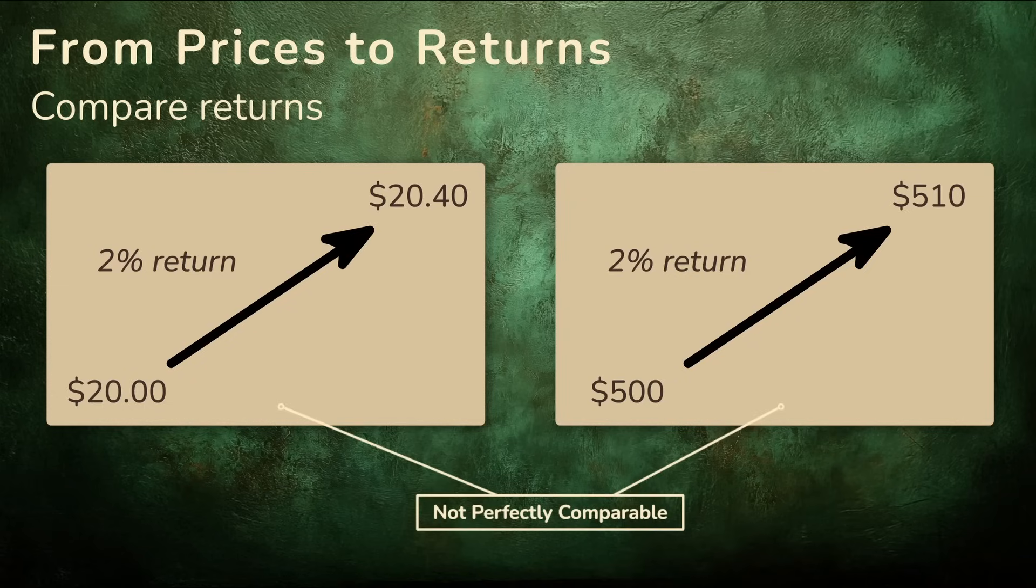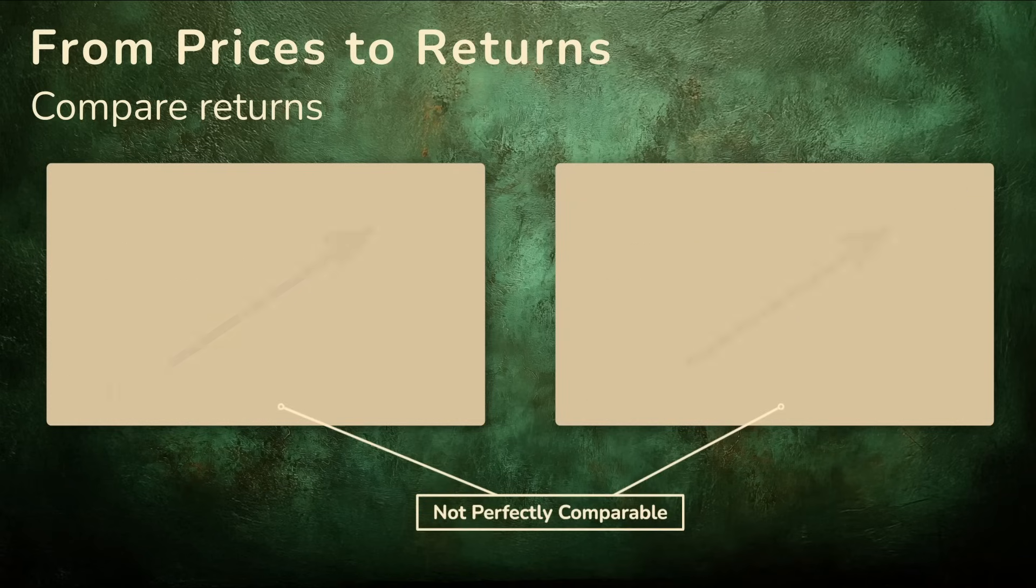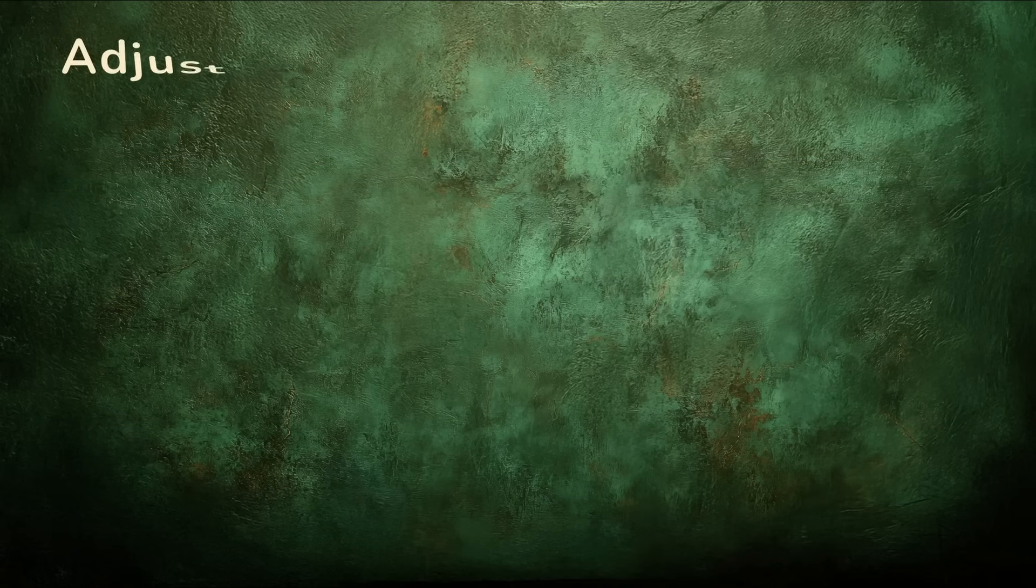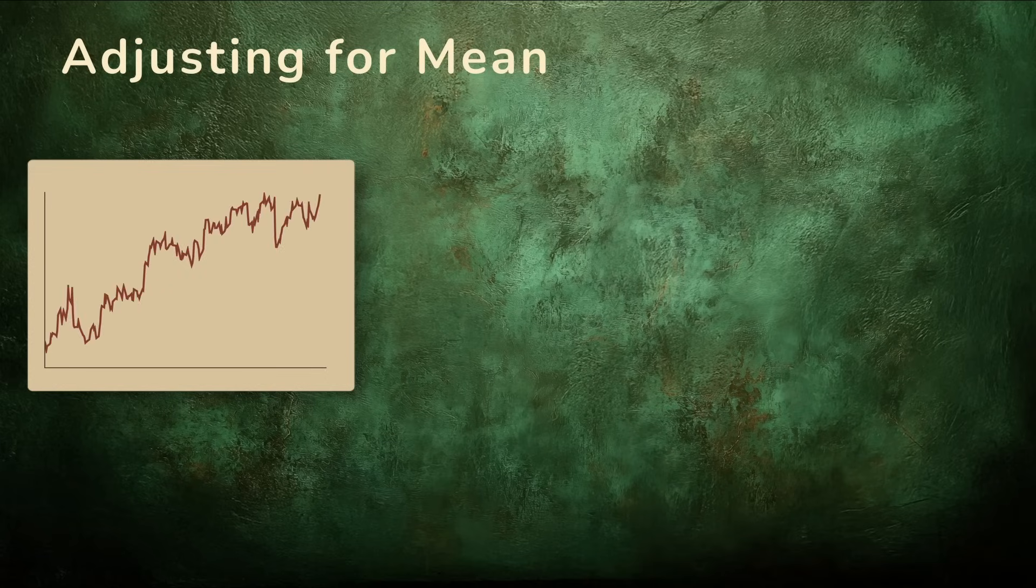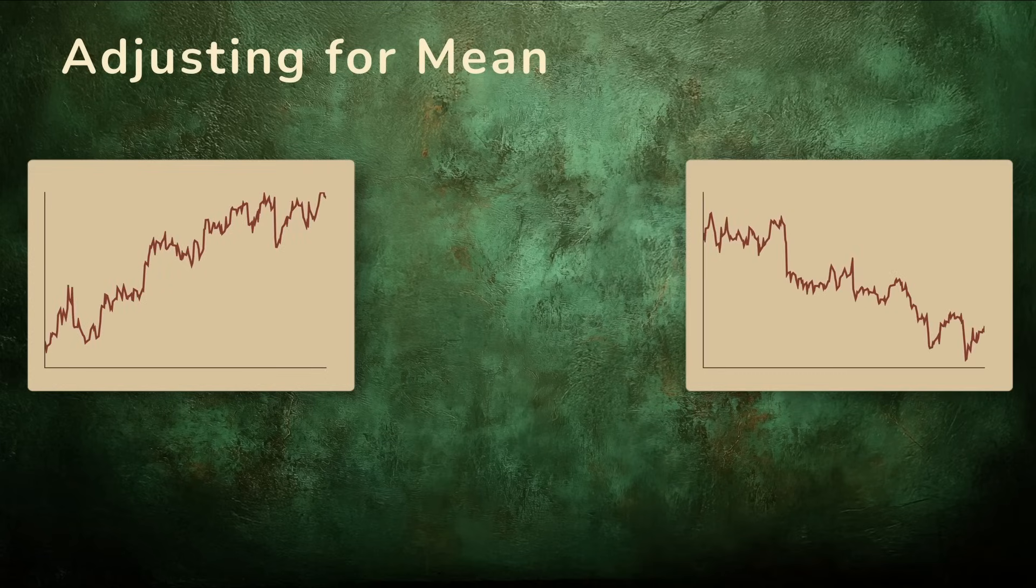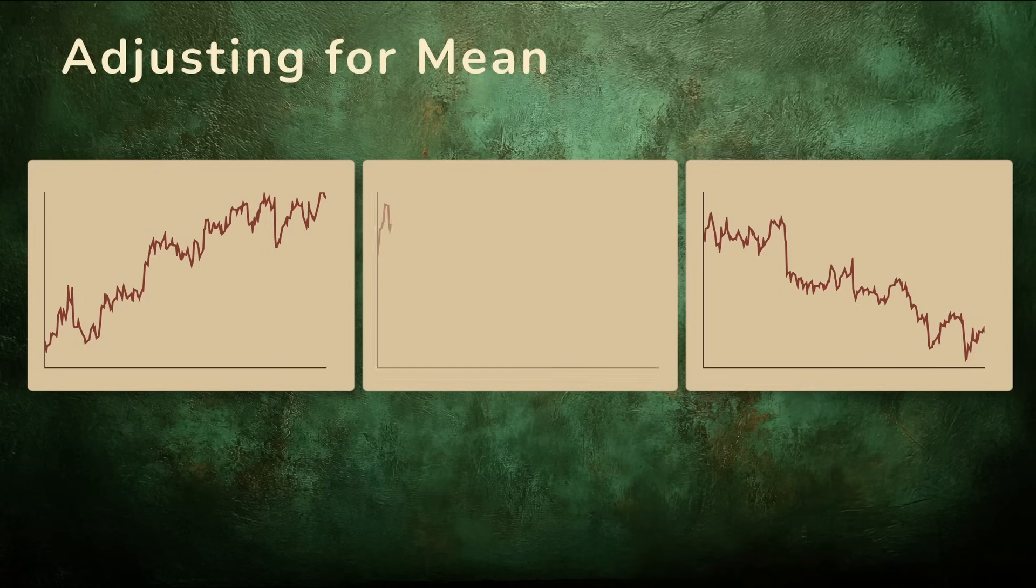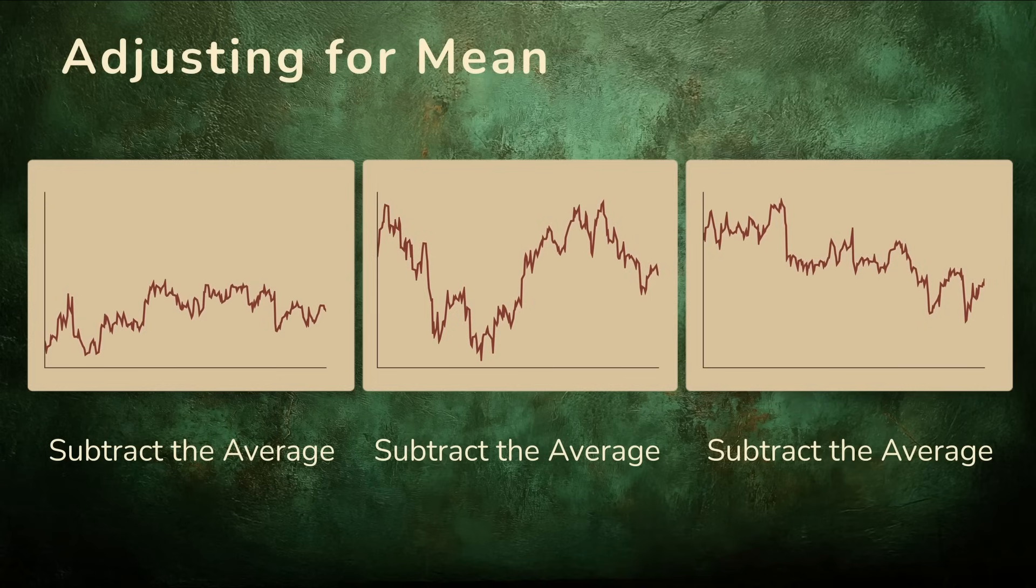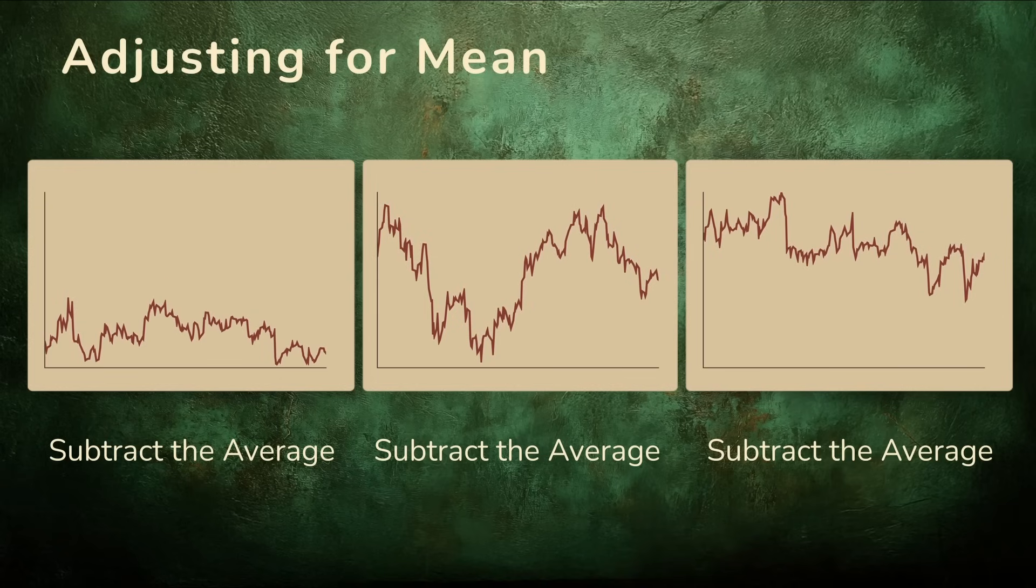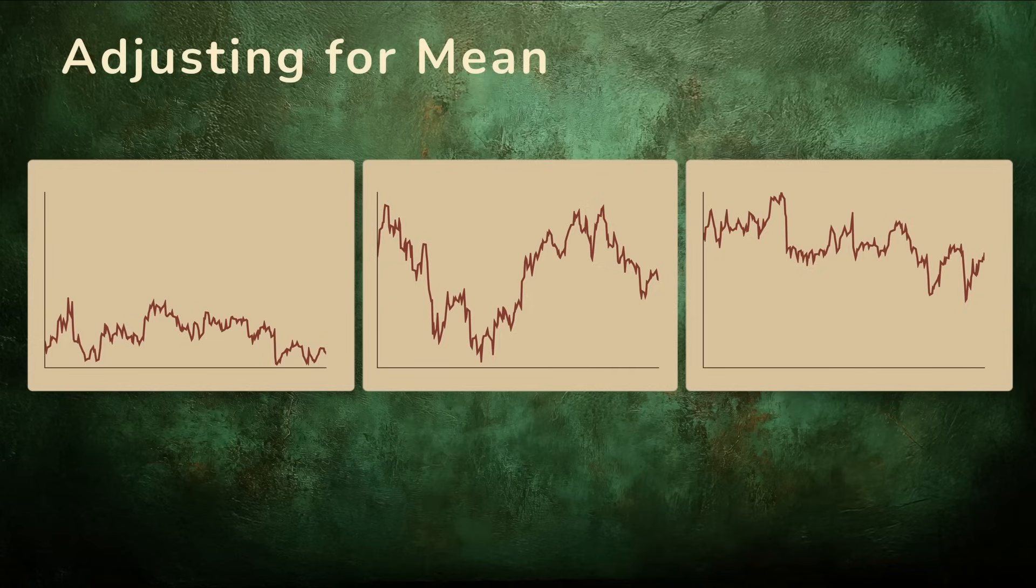But even with returns, you wouldn't say the stocks are perfectly comparable. When we compare stocks, we also need to consider that each stock has its own average return over the year. Some stocks naturally trend upwards, while others might be on their way down. Meanwhile, some steady stocks hover around a more stable average. By subtracting this average return, essentially removing each stock's baseline, we get a clearer picture of how much each day's return deviates from that norm. This way, we're focusing purely on the variations, not the overall trend.